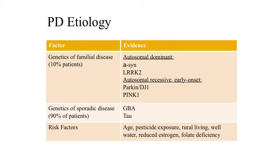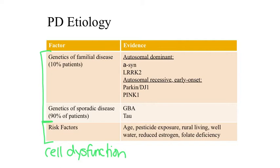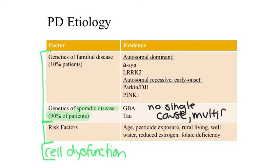The etiology of Parkinson's disease is complex and involves a combination of genetic changes, environmental risk factors, and cellular dysfunction. One thing to note is that approximately 90% of cases are considered sporadic or idiopathic disease, meaning they do not have a single identifiable cause. There are some genetic mutations involved in sporadic disease, but these are complicated multifactorial genetic changes that increase the risk of developing Parkinson's disease in those 90% of patients.